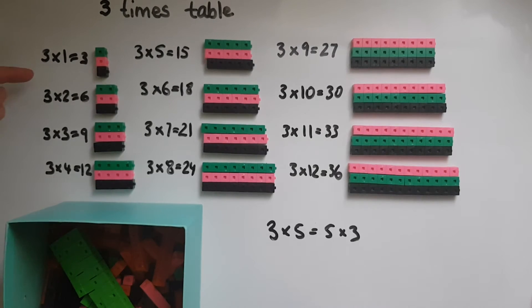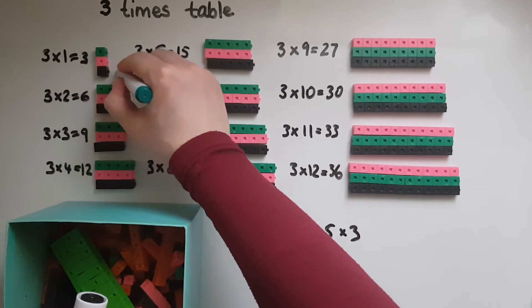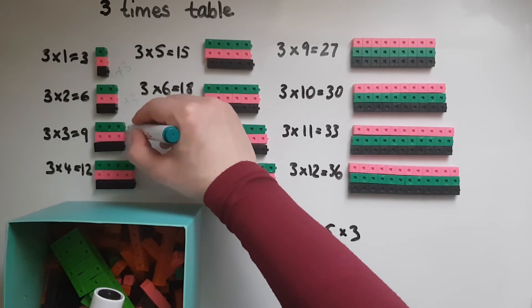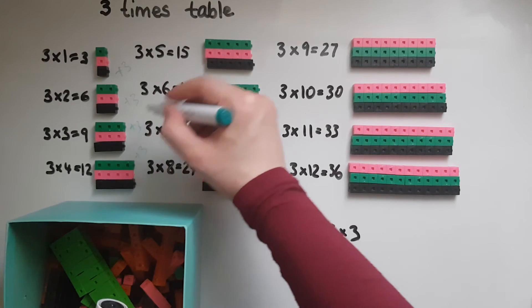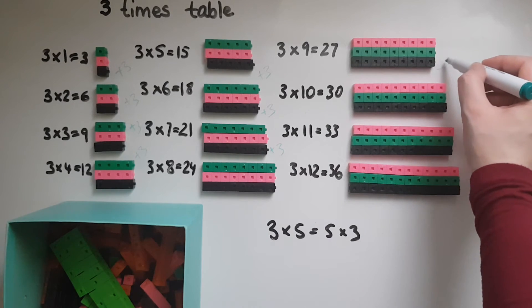So looking at the pattern, now we've got 3 times 1 is 3. So from 3 to 6, and then 9 and 12, what we're doing is adding 3 each time. And that is the case throughout because we are looking at the 3 times table.